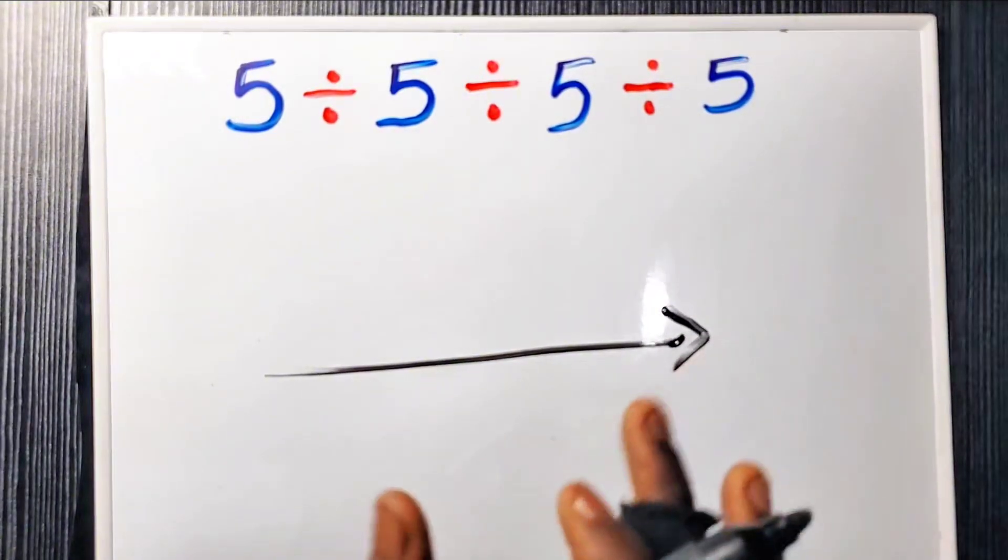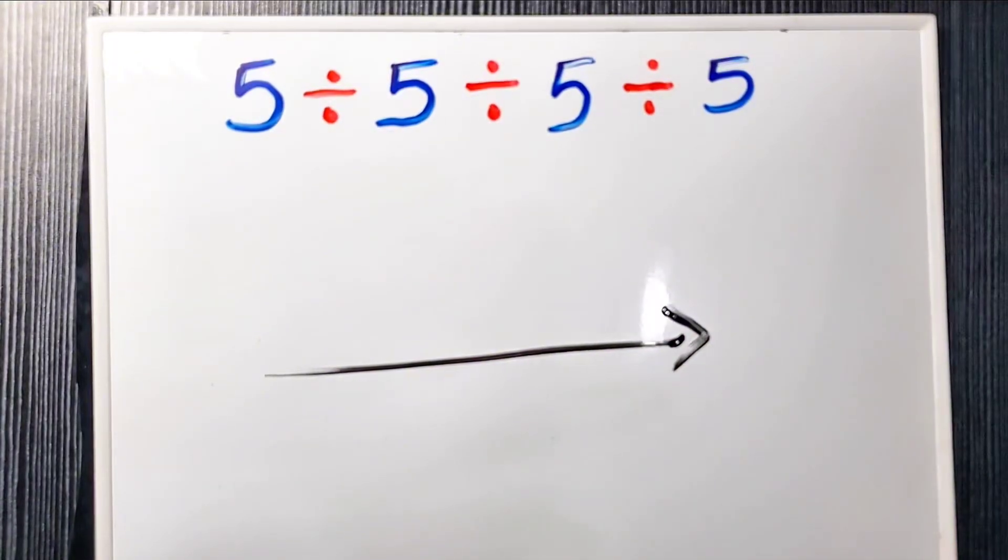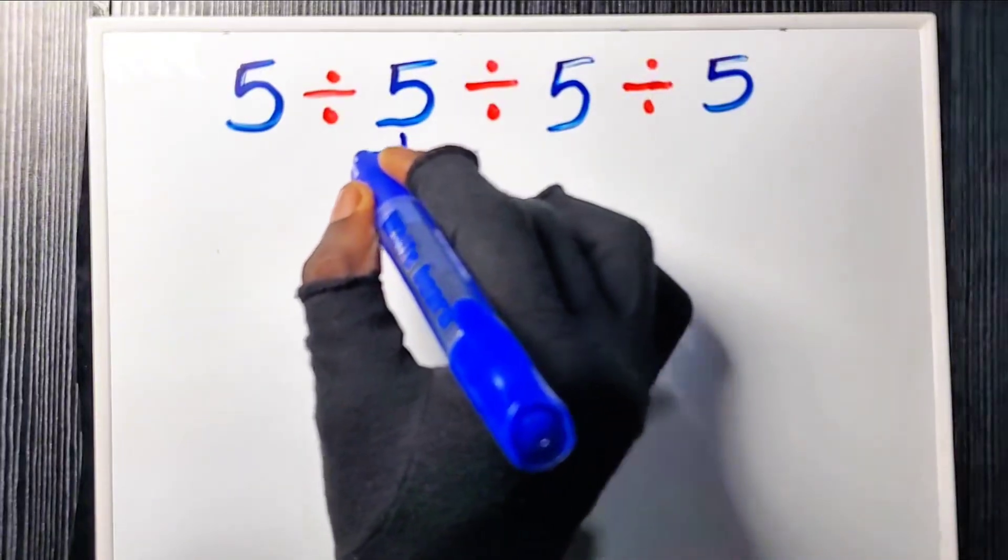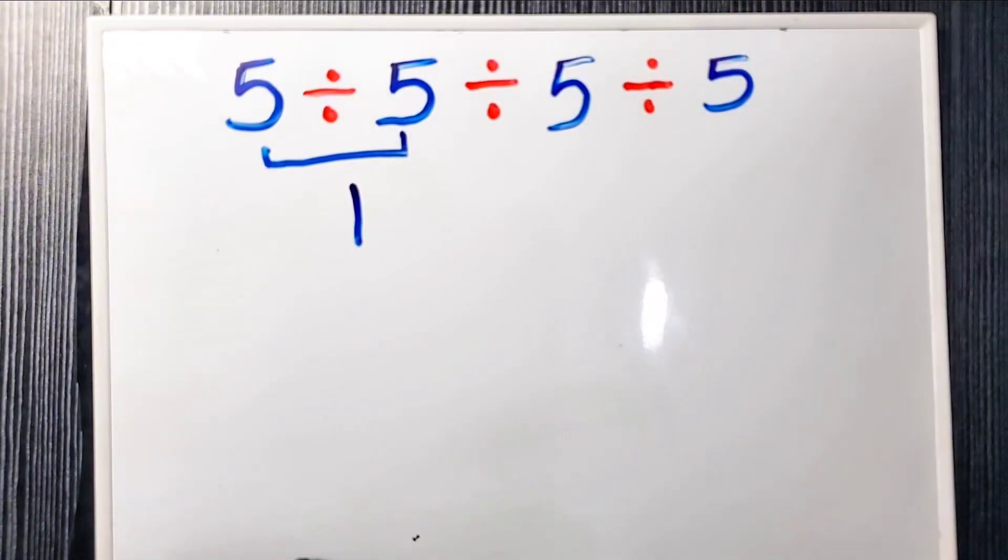We are going to take it one step at a time. Let's do the first pair: five divided by five, that gives us one. Now bring down the rest.